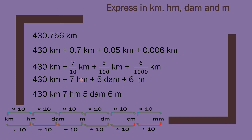Instead of units of length, if there are units of mass — like kilogram, hectogram, decagram, gram — the process remains the same, because these conversion values are the same whether you are measuring mass or capacity.